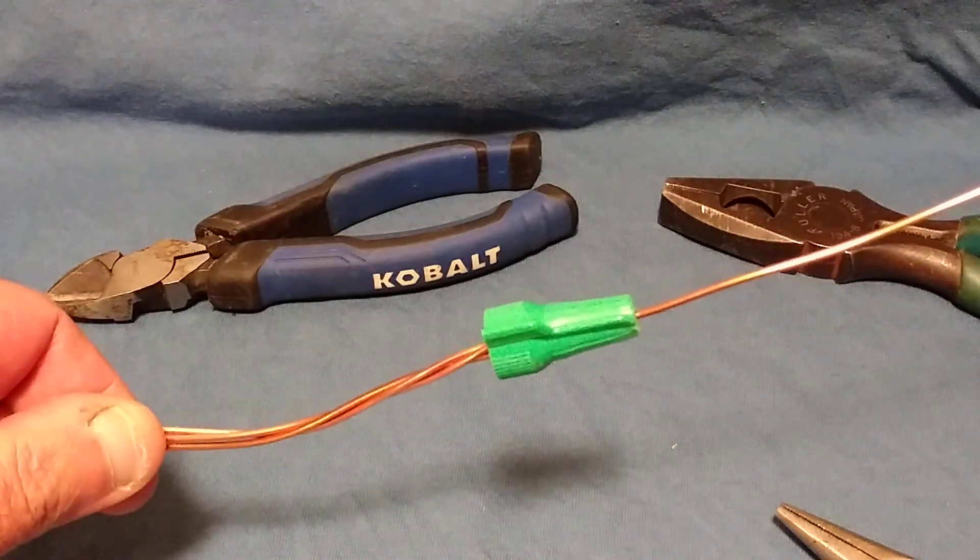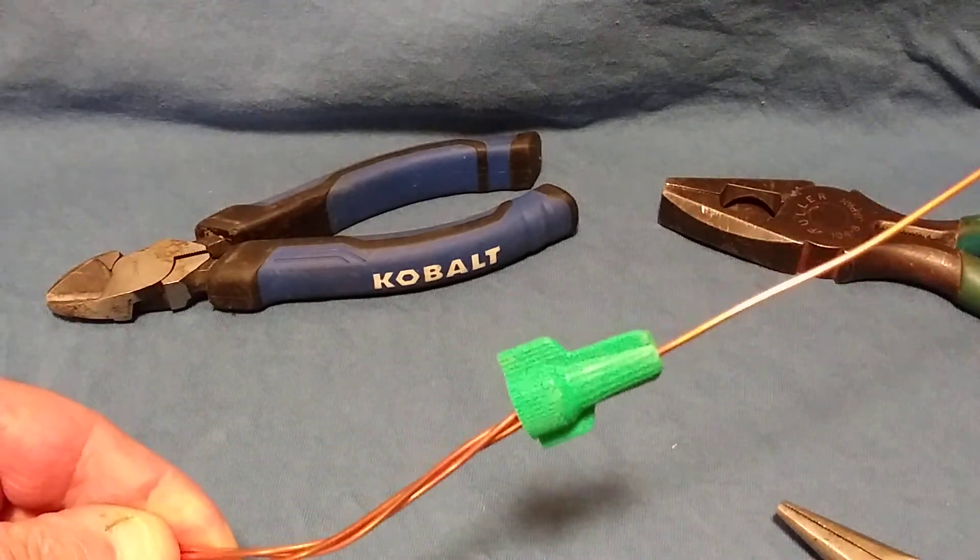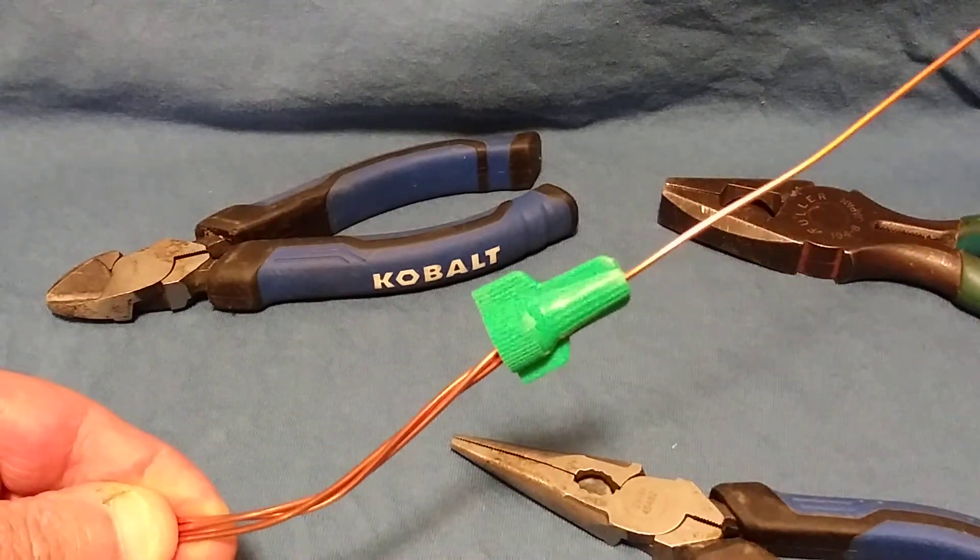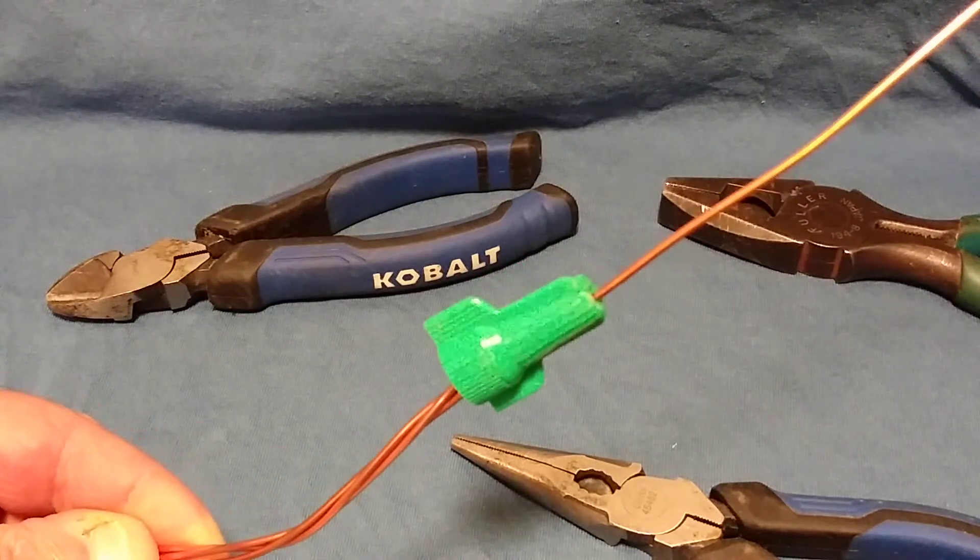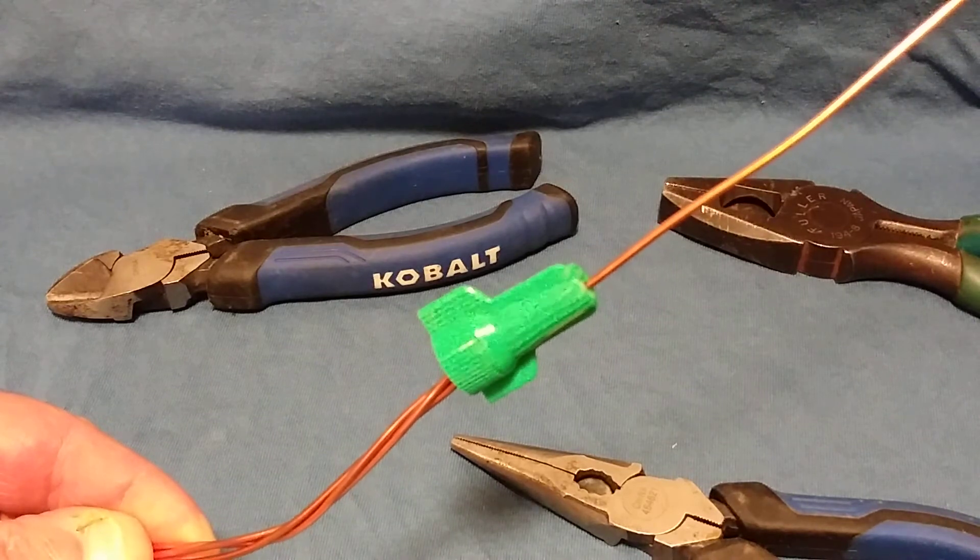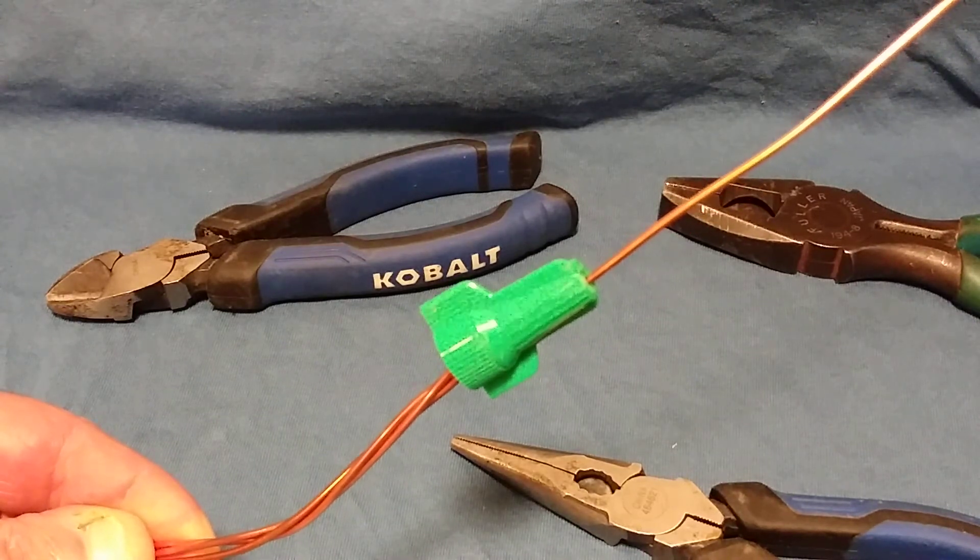So that is what your green wire nut will look like. And as you can see, the wire tail going to your green screw comes out the end of the wire nut.